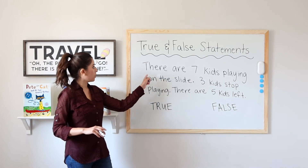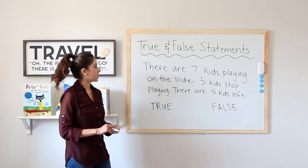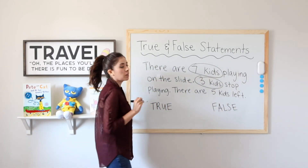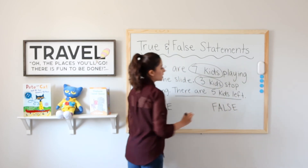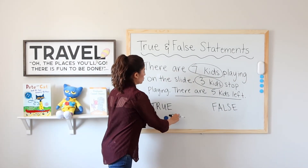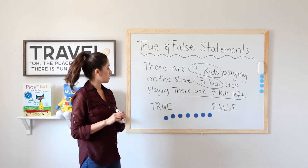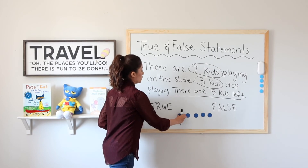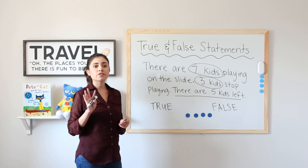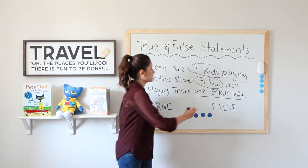Ready for our last problem? There are 7 kids playing on a slide. 3 kids stop playing — there are 5 kids left. Is this true or false? I know there are 7 kids playing and 3 stop. Let's use our magnet counters: 1, 2, 3, 4, 5, 6, 7. Take away 3 — 1, 2, 3. Do I have 5 kids left? 1, 2, 3, 4. No, I have 4 kids left. 7 minus 3 equals 4, not 5. Therefore, this statement is false.